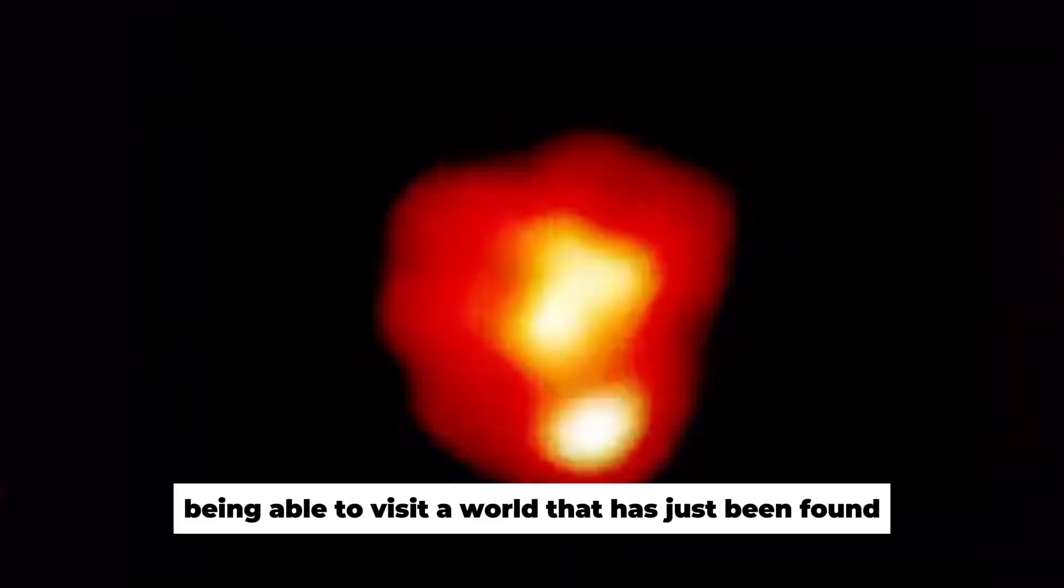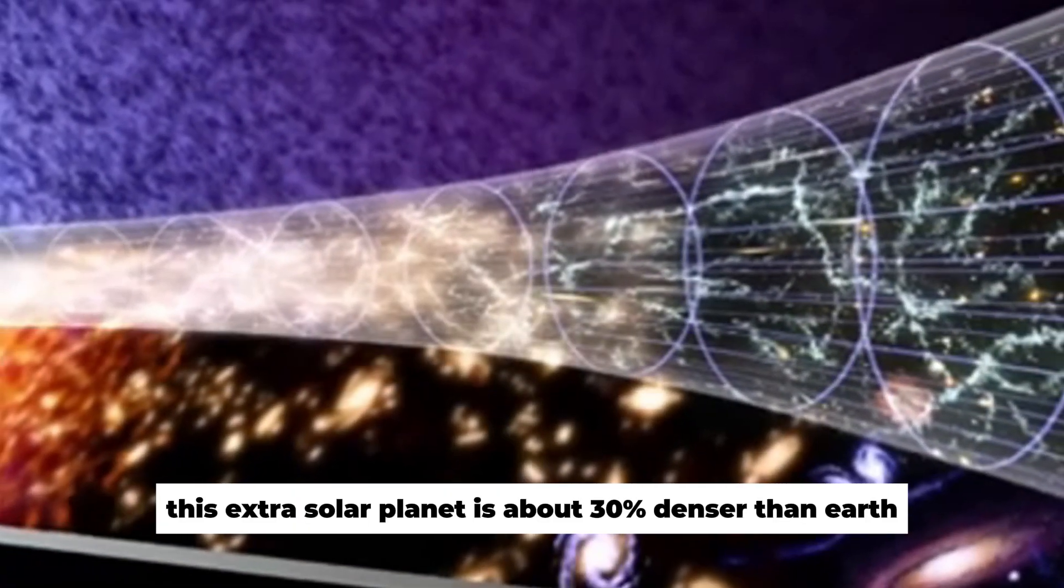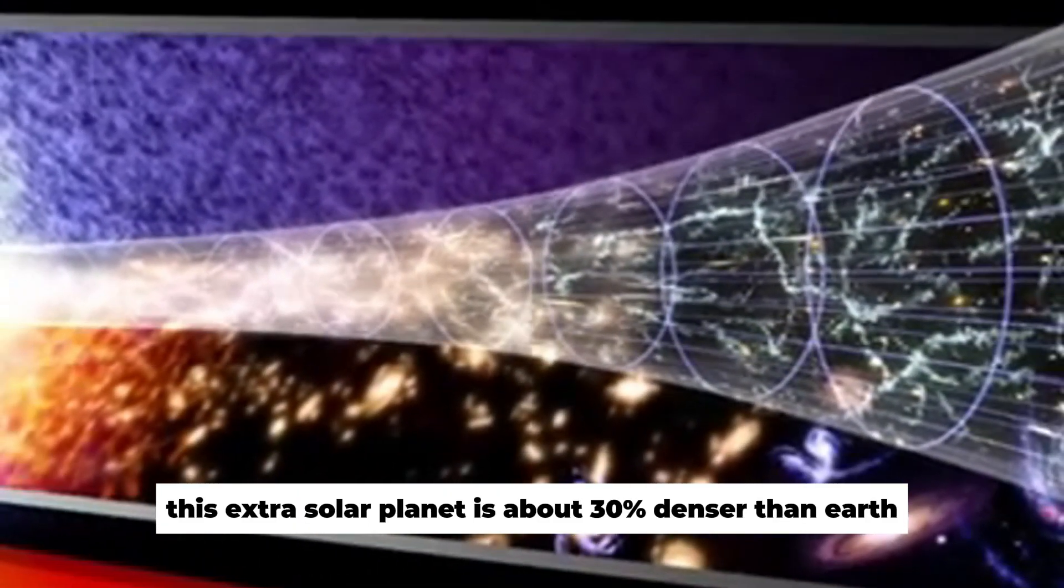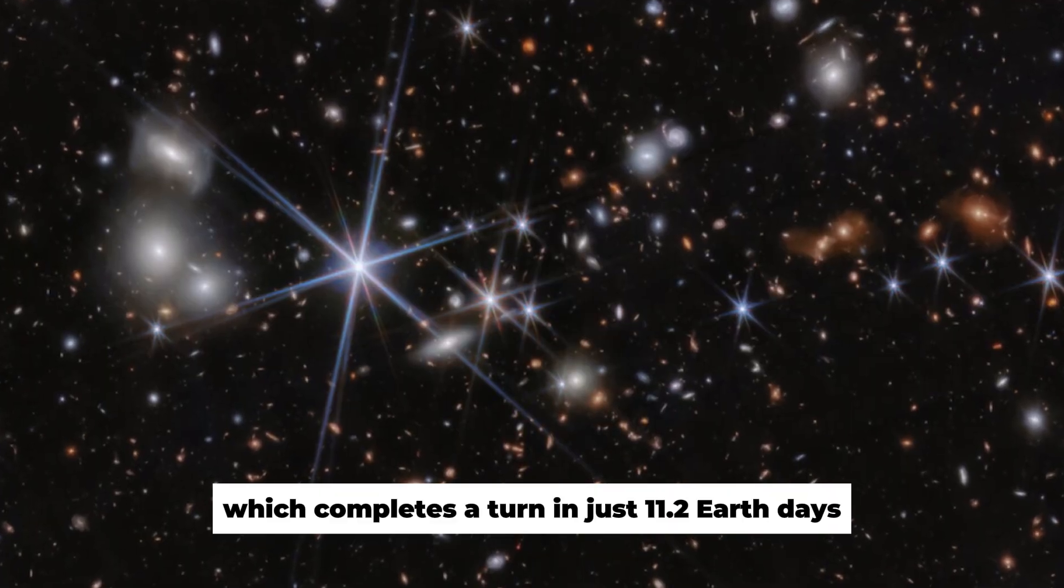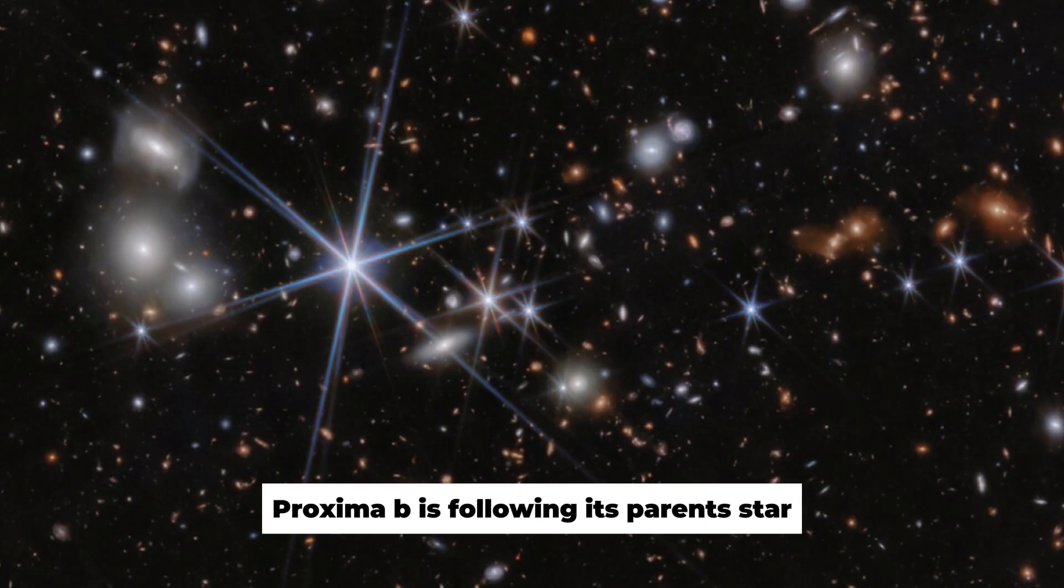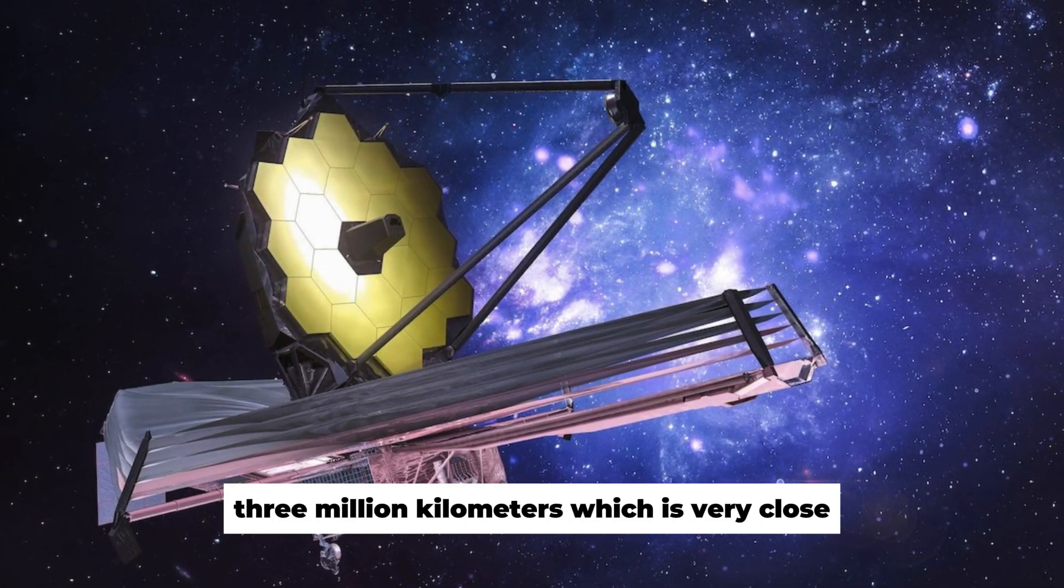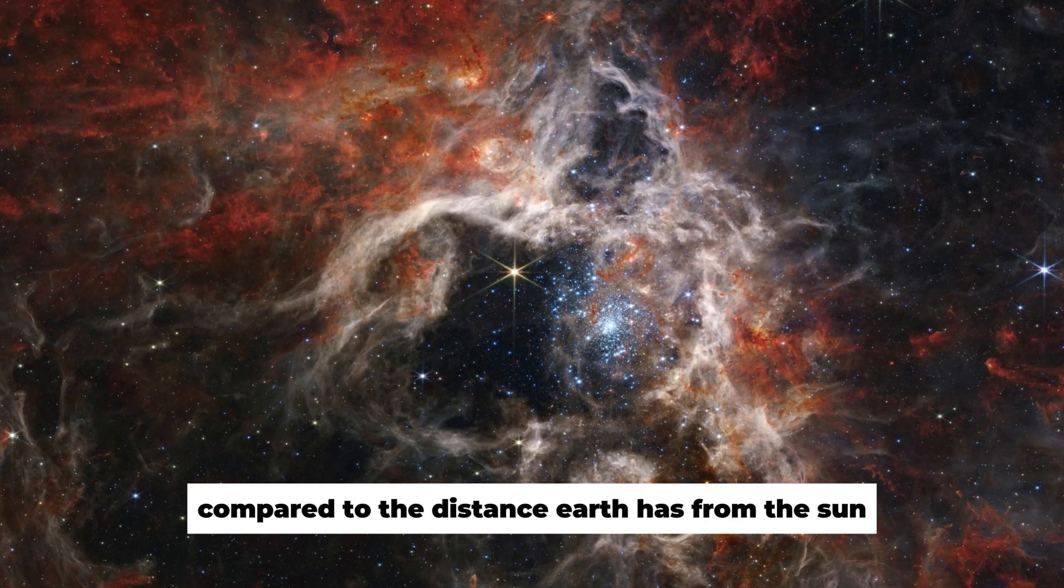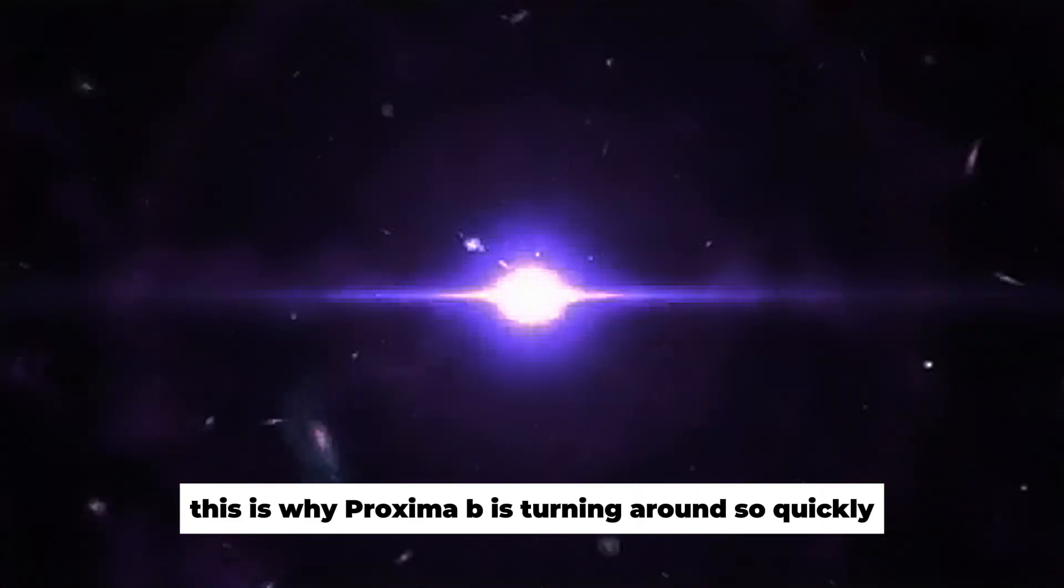Imagine being able to visit a world that has just been found that is so close to our own. This extrasolar planet is about 30% denser than Earth, making it a little bigger than our home world. Its very fast orbit, which completes a turn in just 11.2 Earth days, is what really gets people interested. Proxima b is following its parent star at a distance of only 7.3 million kilometers, which is very close compared to the distance Earth has from the Sun. This is why Proxima b is turning around so quickly.